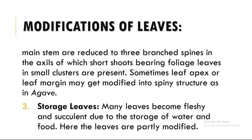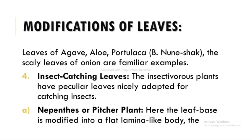The next modification is storage leaves. Many leaves become fleshy and succulent due to the storage of water and food. Here the leaves are partially modified — leaves of Agave, Aloe, and Portulaca, and the scaly leaves of the onion are familiar examples.